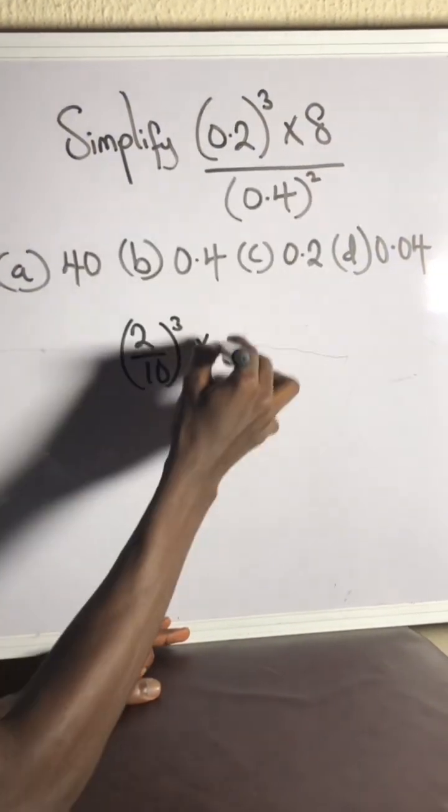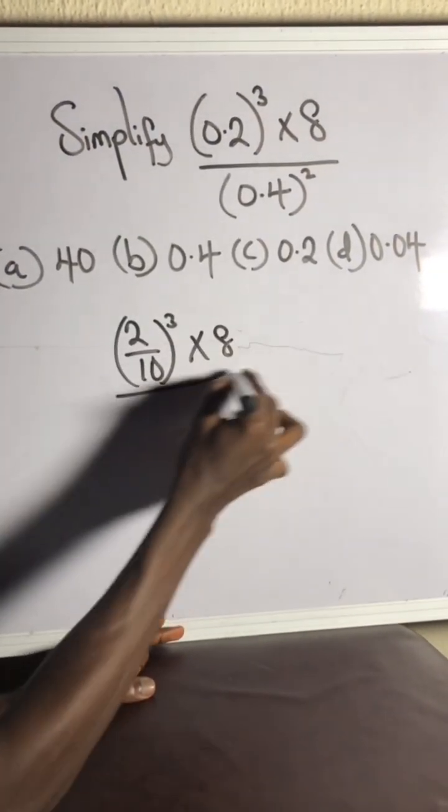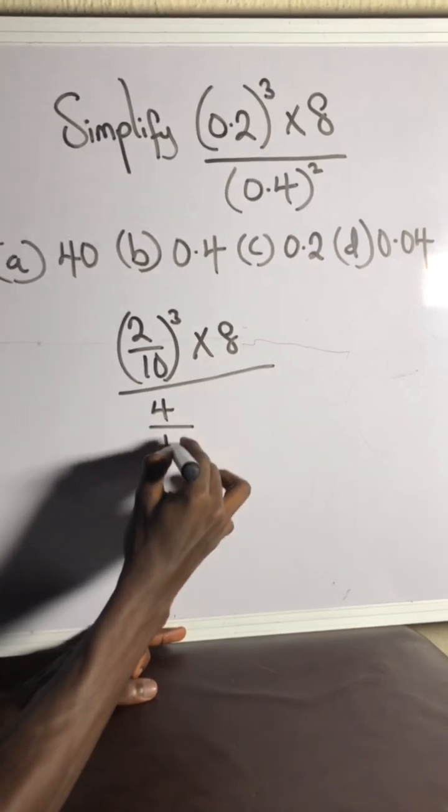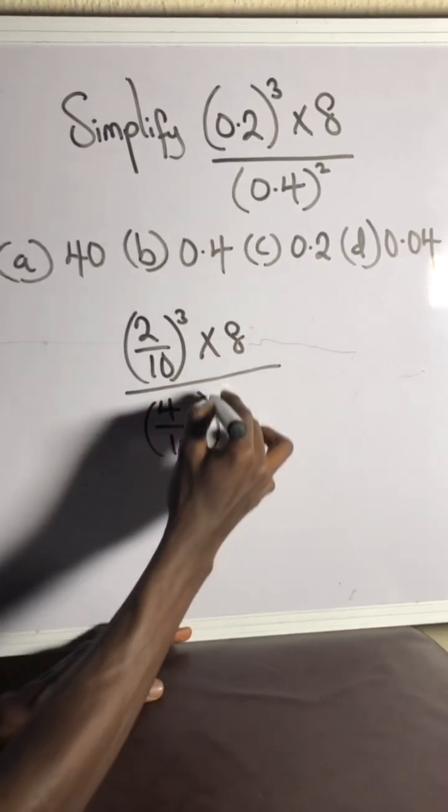Times 8 at the numerator. Okay, 0.4 is actually 4 over 10, okay, and then you square it.